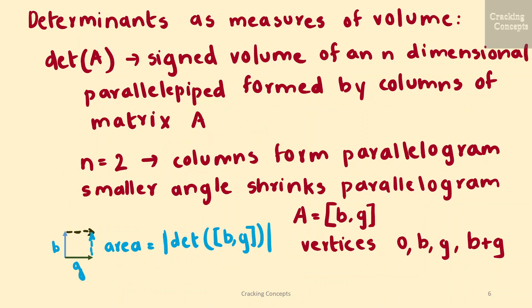Now we look into determinants as measures of volume. The notion of a determinant is natural when we consider it as a mapping from a set of n vectors spanning an object in the n-dimensional space. It turns out that the determinant of A is the signed volume of an n-dimensional parallelepiped formed by the columns of matrix A. For n equal to 2, the columns form a parallelogram, and as the angles between the vectors get smaller, the area of the parallelogram shrinks, as you can see in the figure.